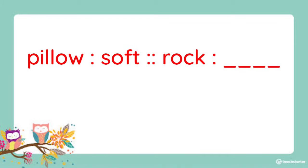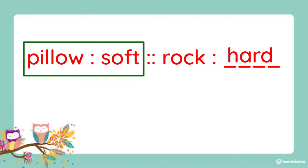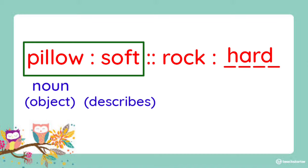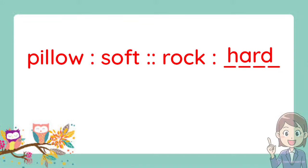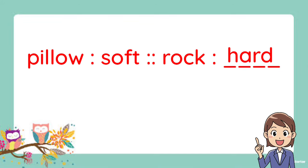Next. Pillow is to soft as rock is to blank. The answer is hard. What is the relationship between pillow and soft? Pillow is the object, or the noun, while soft is the word that describes the pillow, or the adjective. So for the second pair, we have to think of a word that describes a rock. We can say it's hard. So the complete analogy is pillow is to soft as rock is to hard.